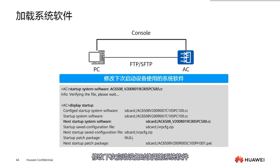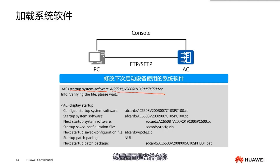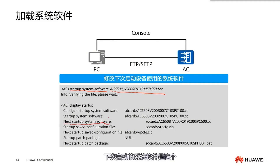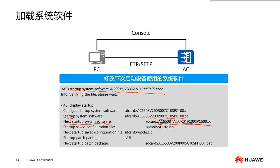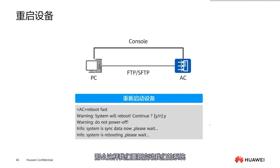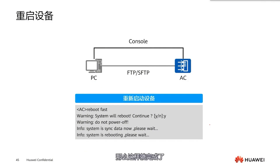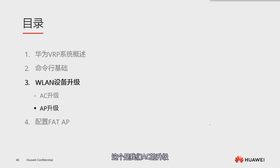Now the file is ready. The next step is to update the startup system software using the command 'startup system software' followed by specifying the file name. After completion, you can verify with 'display startup' which system software will be used at the next startup — this will differ from the current startup software, confirming the versions are different. By restarting the system, it will boot with the newly updated software version. This concludes the upgrade process.